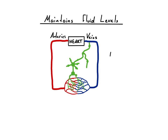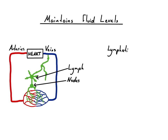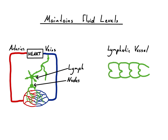This fluid, now called lymph, flows up various lymphatic vessels to two big ducts, which return the fluid back to the circulatory system. Since the lymphatic system does not have a heart to pump the fluid around, the upward flow occurs through the contraction of smooth muscles in the lymphatic vessels. Similarly to veins, lymphatic vessels also have valves to prevent backward flow.